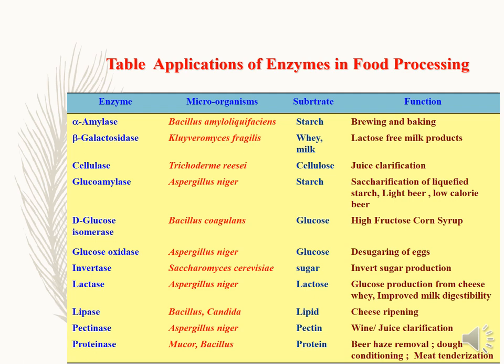For example, lipases from Bacillus and Candida are used in the cheese industry and in food industry for many other applications, such as for stability and conditioning of dough, as emulsifiers, and for development of cheese flavor. Lipases are also crucial for the detergent industry, used to remove various types of stains related to lipids or oily stains. This makes them a very important candidate for both food and non-food applications.